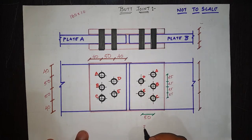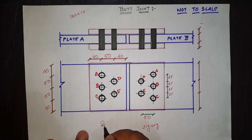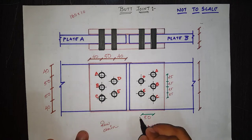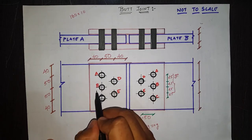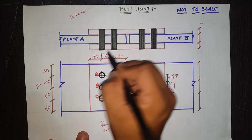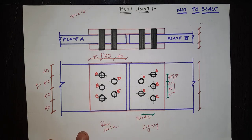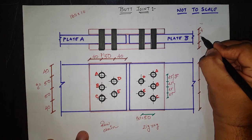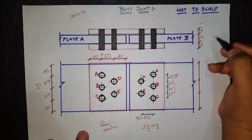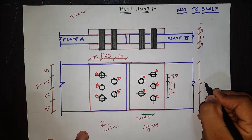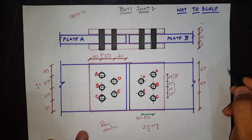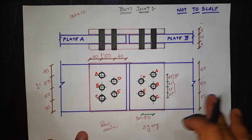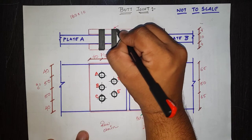For the zigzag pattern, pitch is denoted as psi and gauge as gi. For chain (row) bolting, pitch is p and gauge is g. The cover plate is 4 mm thick, main plate is 10 mm, and cover plate is 4 mm. The distance between bolt lines D to E is 50 mm; with total width 180 mm, the remaining 130 mm is equally distributed — 65 mm on each side. These are the detailing dimensions for the butt joint with M20 4.6 grade bolts.